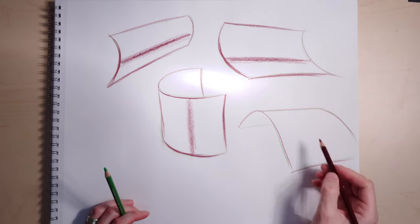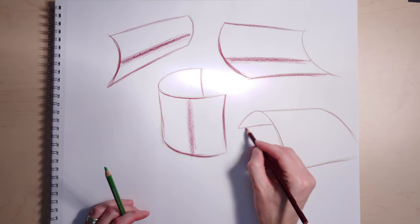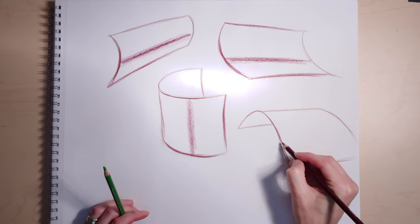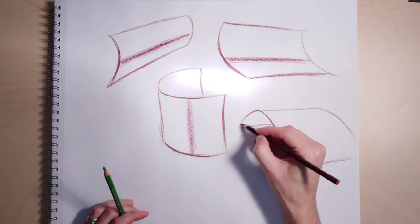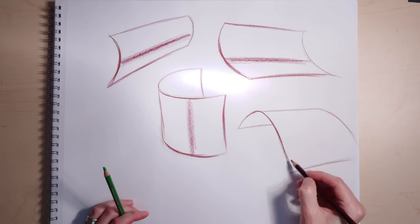And then to emphasize all of this, I've made the arc widen out as it comes forward. So it feels like the back is going further back and getting smaller in space.